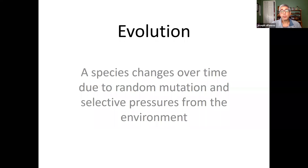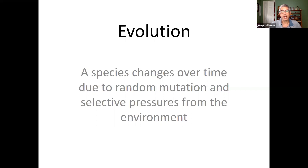Depending upon the mutation, the particular environment may select for or against that mutation, or that mutation could also be neutral — the environment doesn't select for or against it. This is the basis of evolution: mutations occur in a population, and based upon whether that mutation is beneficial or not in a given environment. The environment can change as well, so a mutation which was once beneficial might not be forever, and a non-beneficial mutation could become beneficial if the environment changes.